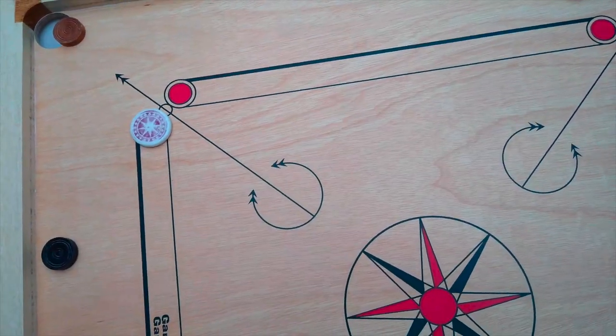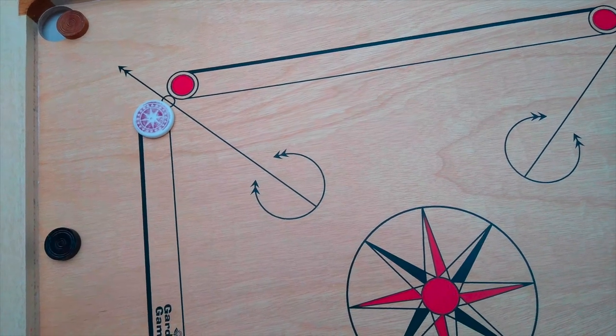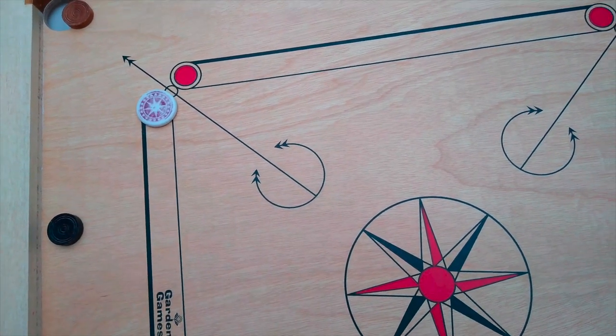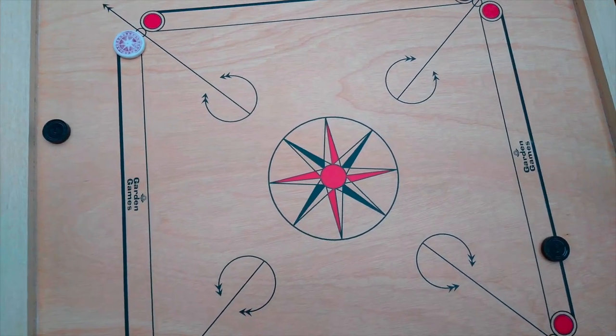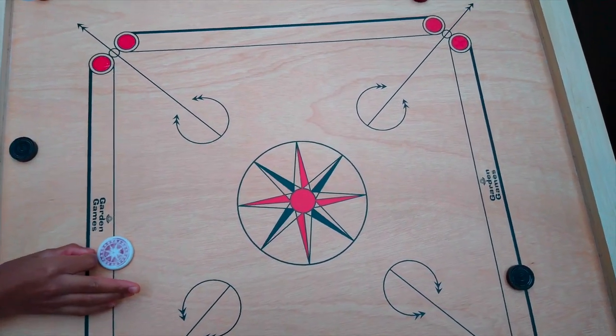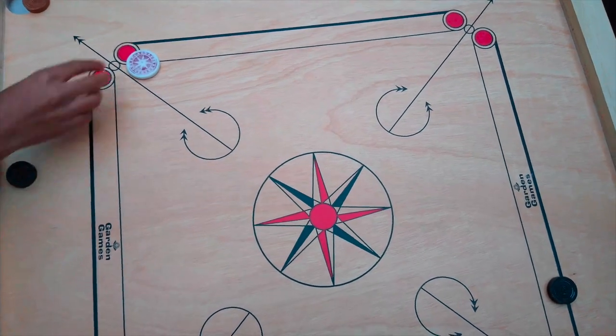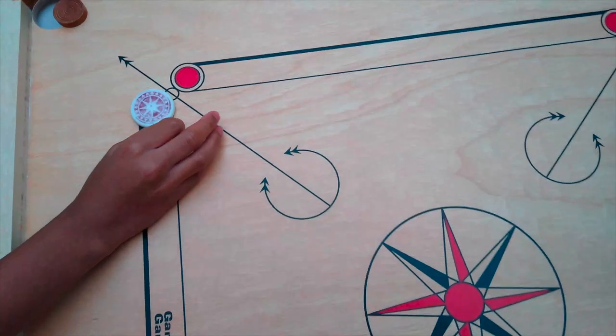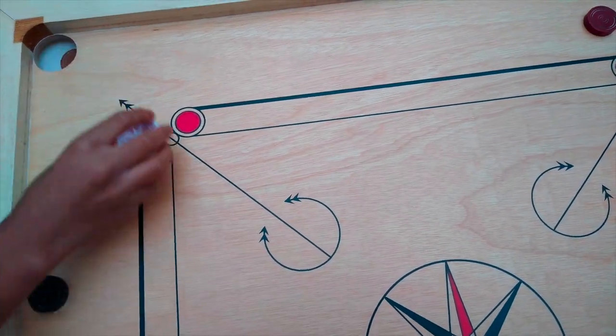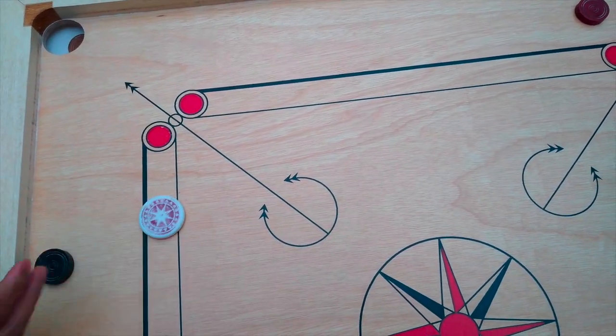Before, you were not allowed to hit directly when carrom men were behind the baseline. At that time you had to do a back shot like this. But now there's something called thumbing, which is this, and now people find that easier and better.